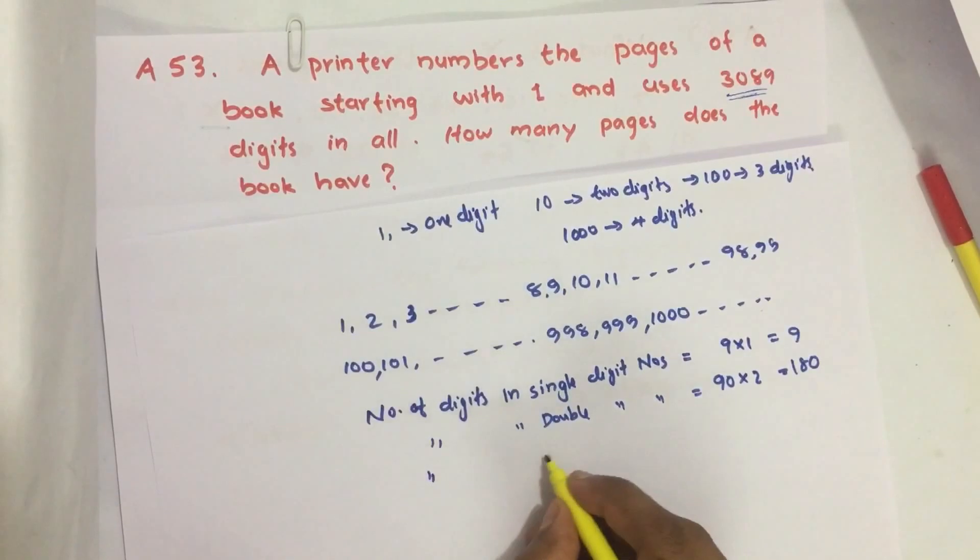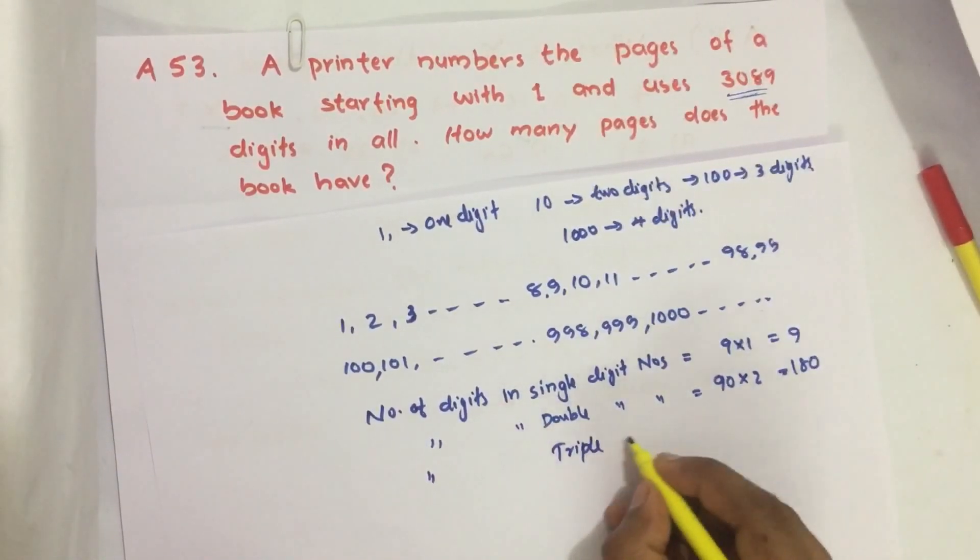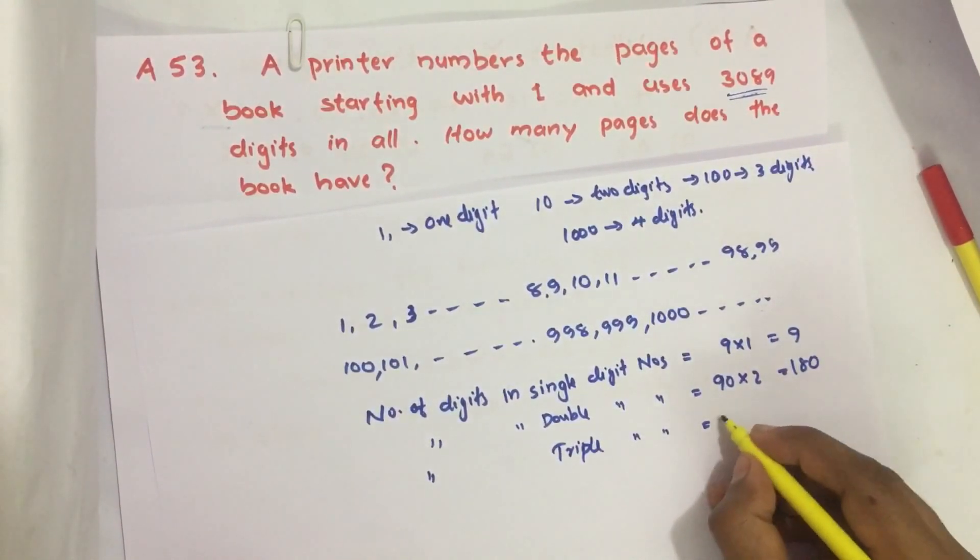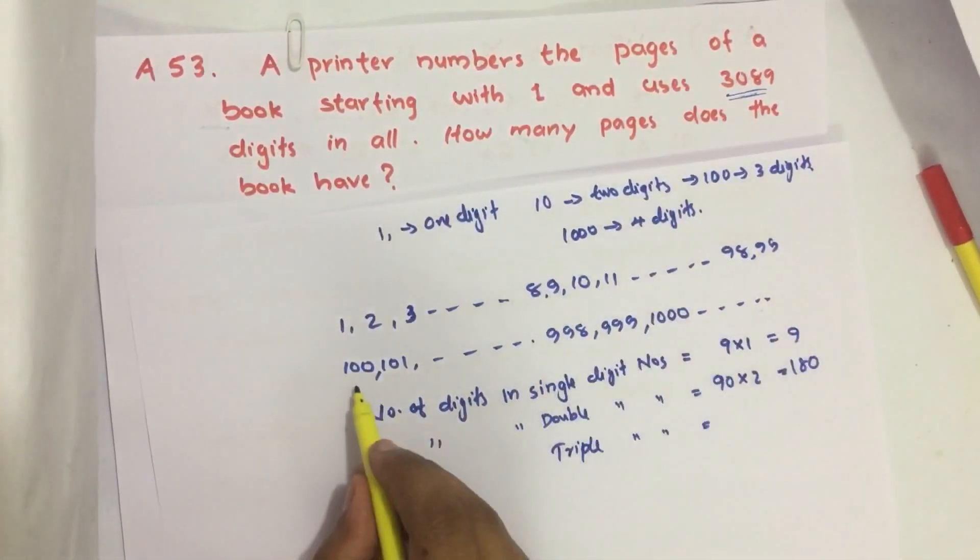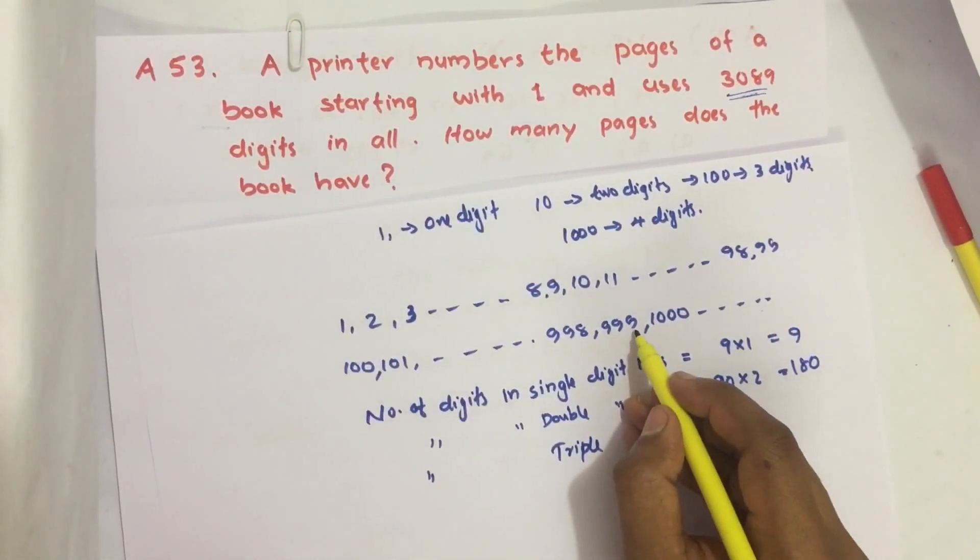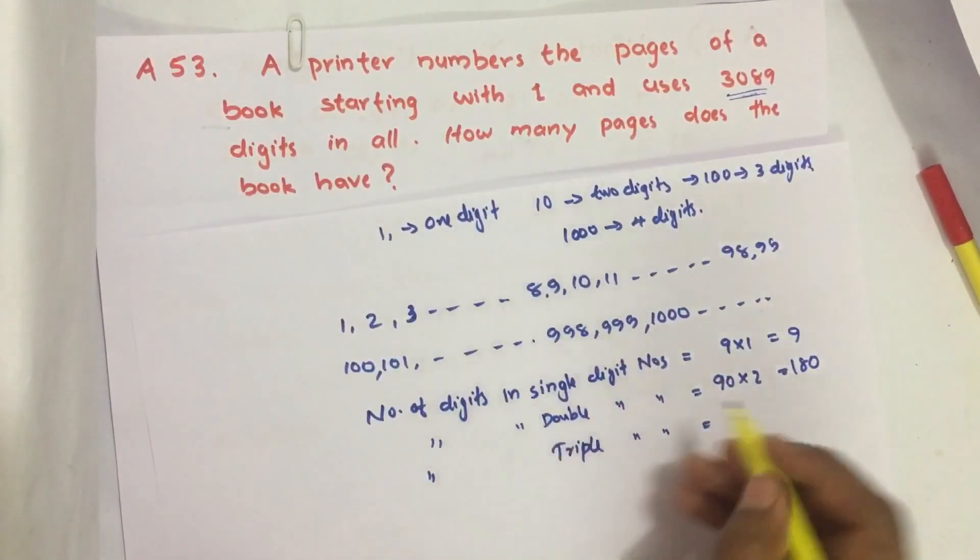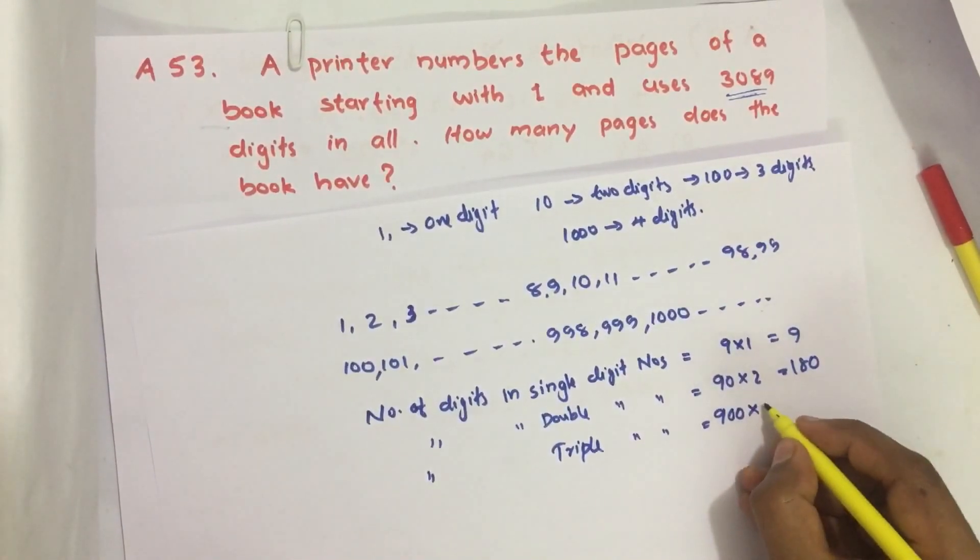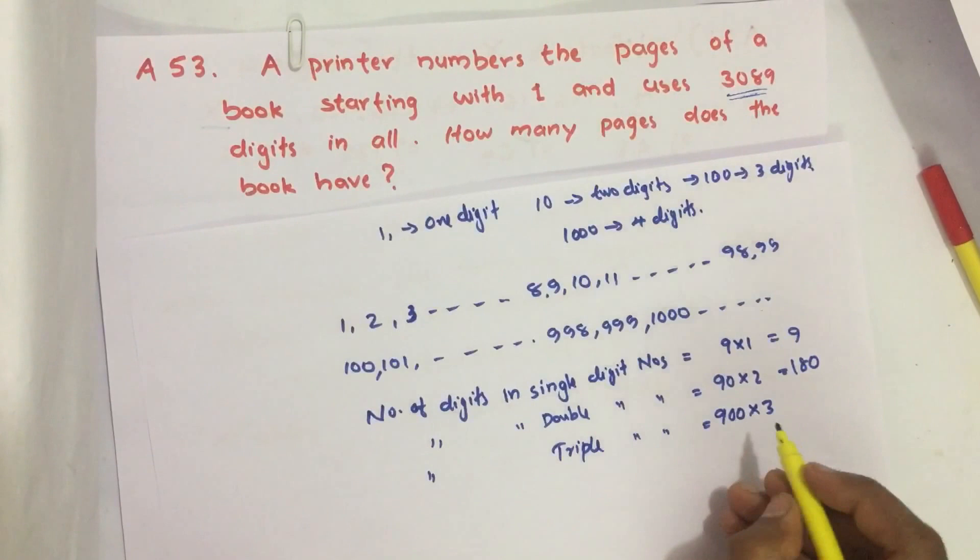Similarly, for triple digit numbers from 100 to 999, there are 900 numbers, and we use three digits to write each number.